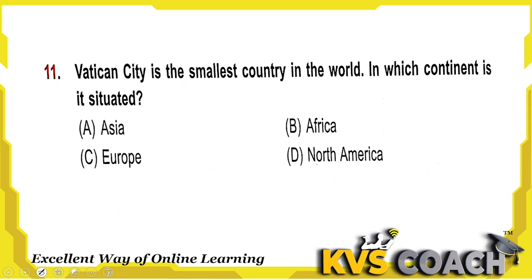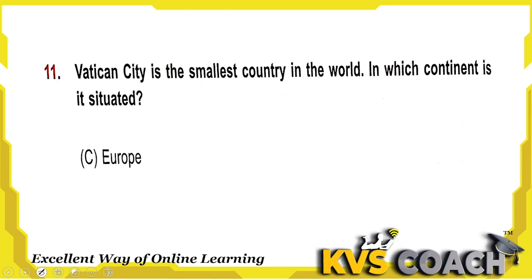Next question: Vatican City is the smallest country in the world. In which continent is it situated? Vatican City is situated in Europe. Option C is the right answer.